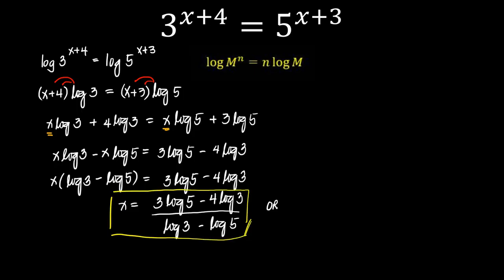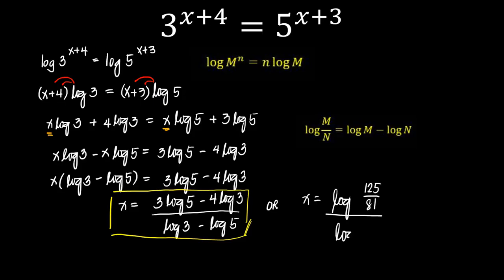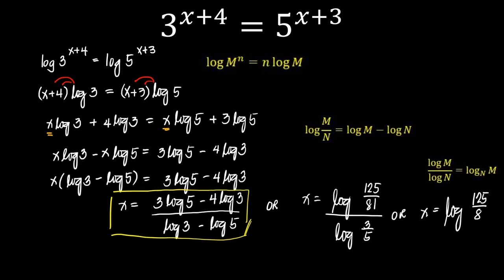If you would like to rewrite this, it could be rewritten as logarithm of 125 over 3 to the 4th — that's 81 — divided by logarithm of 3 over 5, or as logarithm base (3/5) of 125/81. But of course the first form would be the easiest answer.